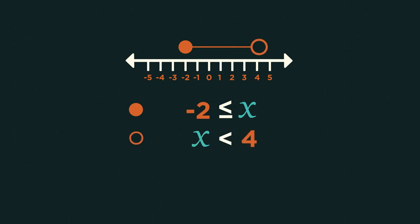And a hollow circle here, so it's going to be less than 4. We can combine these things into a double inequality, which we would write like this.